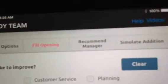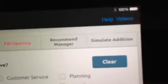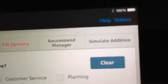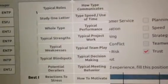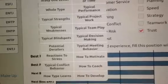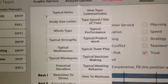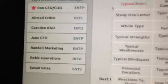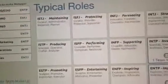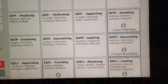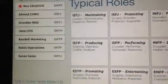As you can see, there are graphical options, analytical options, fill an opening, recommend manager options, and simulate addition among all your choices. The analysis options give you 20 ways to understand different behavior patterns — from how to develop, to the typical roles these type patterns tend to play on the team. You can see the whole team spread out on the typical pattern.